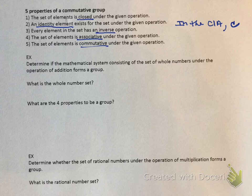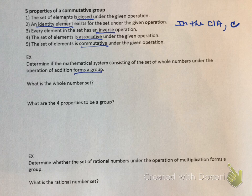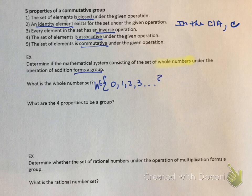The example says: determine if the mathematical system consisting of the set of whole numbers under the operation of addition forms a group. We're just looking to see if it forms a group. When we check, if one of the four properties comes out to be no, then the whole thing is not a group. The whole number set is 0, 1, 2, 3, dot dot dot — it does not contain any negative numbers, fractions, decimals, or irrational numbers.